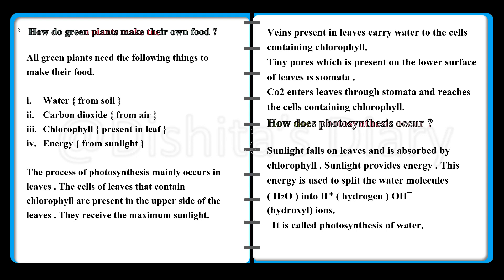Plants also need energy from sunlight. The process of photosynthesis mainly occurs in the leaves. The cells of leaves that contain chlorophyll are present on the upper side of the leaves, where they receive the maximum sunlight.